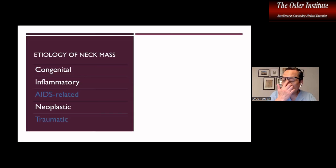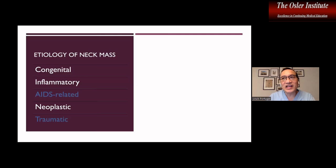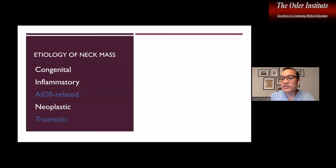One thing that falls into the inflammatory category is granulomatous disease, such as caseating granulomatous disease related to TB. And then there's the non-caseating version of granulomatous disease, which is sarcoidosis. So sarcoidosis is one of the manifestations of a neck mass, and it would manifest on needle biopsy with granulomatous changes.